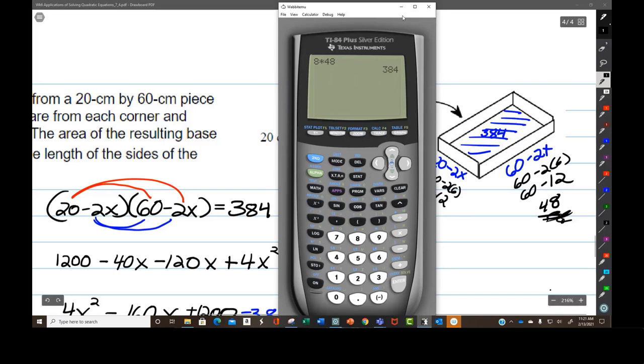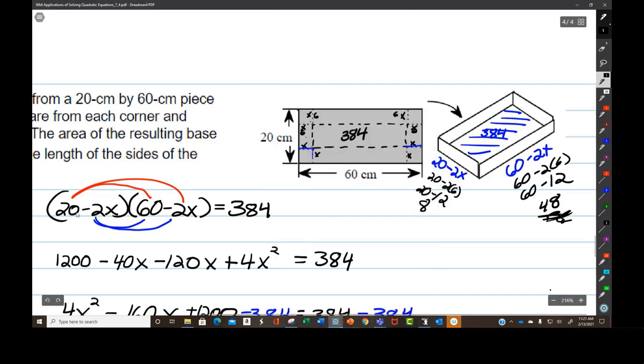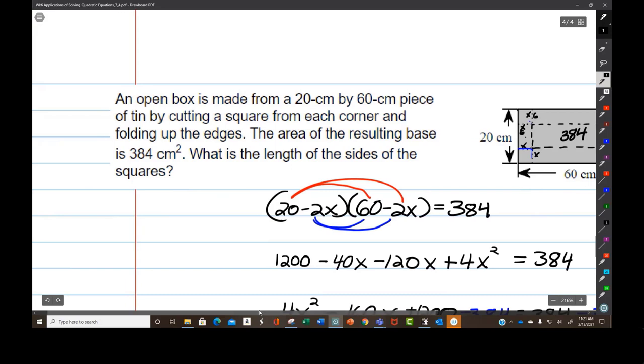The length of each side of the squares that get cut out of the corners, they're 6 centimeters each. So x equals 6. The length of the sides of the squares are going to be 6 centimeters. And we are done.